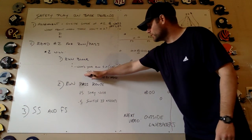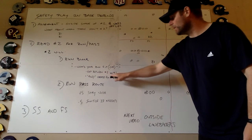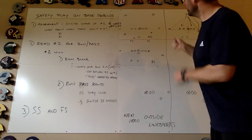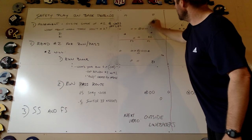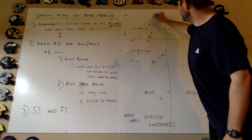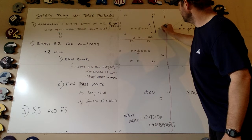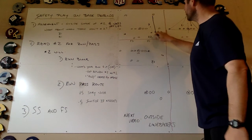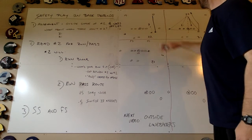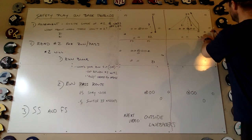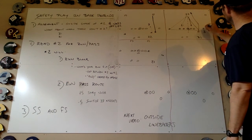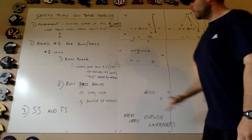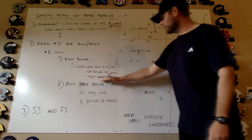First off, what is your run fit? Your run fit is the gap between number two and number one. In this scenario, if number two goes and blocks the sandbacker, your run fit is in that gap between number one and number two. That's your gap in our defense and in most defenses. Same thing in a 31 — if number two blocks, this is your gap between one and two.